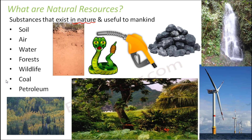Coal and petroleum are also natural resources because we cannot create them. In this lesson, our agenda is to talk in more detail about coal and petroleum — how they are beneficial to us. Coal, when burned, produces a lot of heat energy used for cooking and for generation of electricity. Petroleum yields products like petrol, diesel, and kerosene, all of which are useful to mankind.